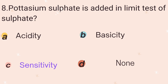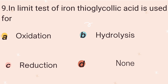Ninth question: In the limit test of iron, thioglycolic acid is used for what purpose? We add thioglycolic acid in the iron limit test. The options are oxidation, hydrolysis, reduction, and none of the above. The correct answer is reduction — thioglycolic acid causes reduction, and ferrous thioglycolate is formed as a result.